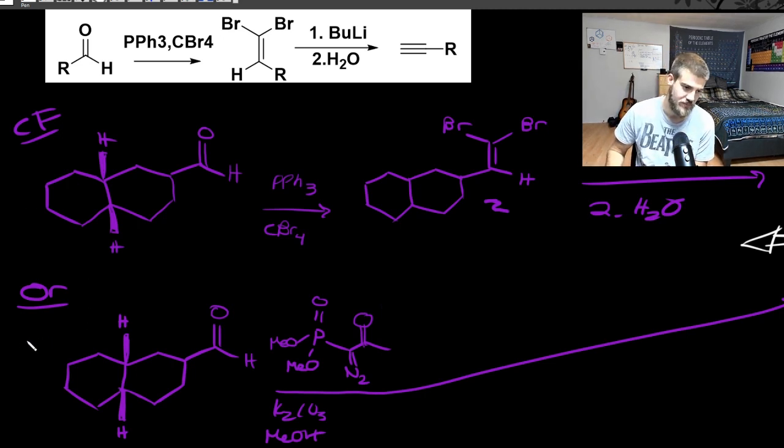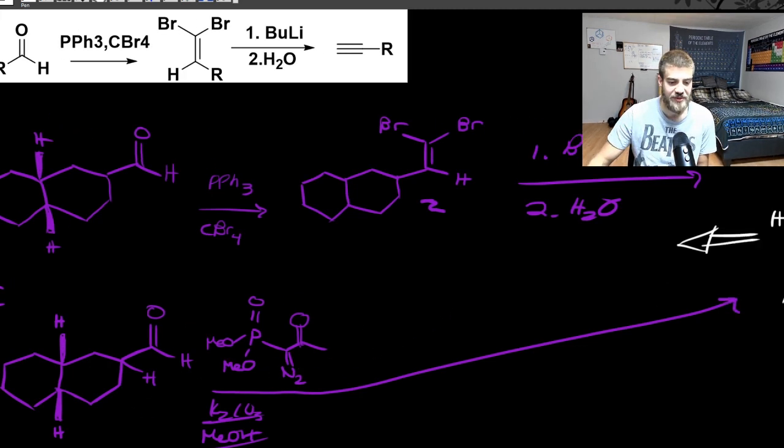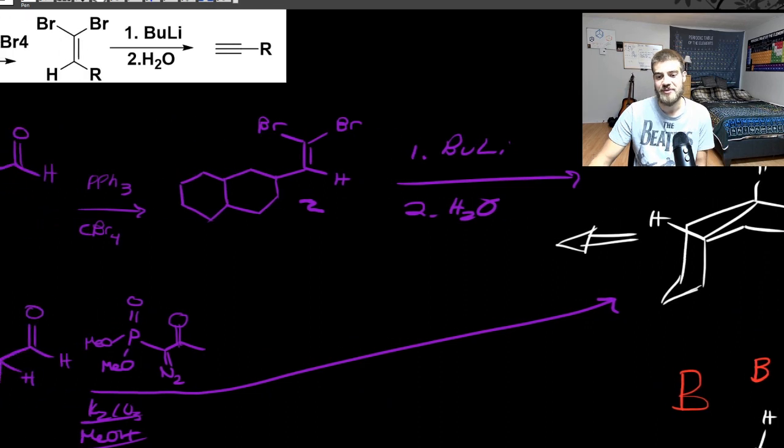You could also do it if you remembered from episode number two, Seyferth-Gilbert. And you could use the Ohira-Bestmann reagent. And to make sure you do not enolize, because you have an alpha hydrogen here. Make sure you don't enolize accidentally and get a dimer or something. So yeah, you can do that in one step. K2CO3, methanol. You do your esterification. You break it up. You get your carbene, and then boom, you get your final product. So that's it for A.